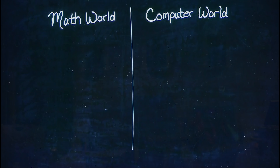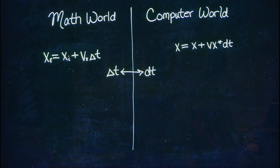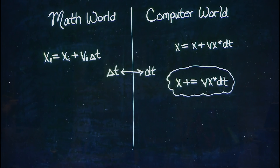Before we look at some display features, let's further explain updating location. We have math world and computer world. In math world, final position is given by x sub f equals x sub i plus v sub x times delta t. But in computer world, instead of delta t we use dt. So our new x equals our old x plus vx times dt. Since we are just adding to our old x, we're just updating location and we can use x plus equals vx times dt.